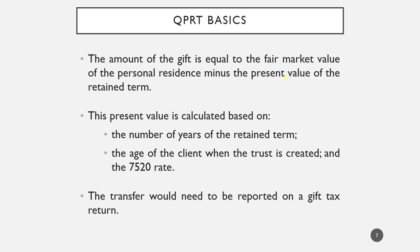When you make the gift of the residence to the trust, the fair market value of your right to reside in the trust for the retained term is determined based on IRS tables and regulations. The fair market value is calculated based on the number of years of the retained term, the age of the client when the trust is created, and the Section 7520 rate for the month the trust is created. Using software such as Tiger Tables or Number Cruncher, you can calculate the gift your client is making — the value of the remainder interest in the residence.